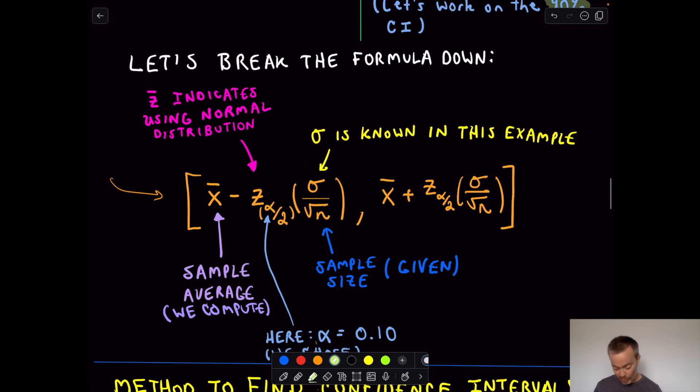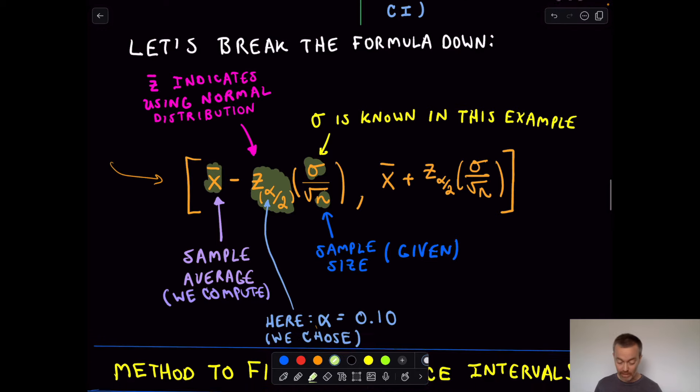Let's talk about the formula real quick. Again, x̄, that's just going to be a sample average. We'll compute it. We just talked about what this z value is. We're just going to look it up from a table. Again, sigma is given. The squared, or excuse me, n was given. That's our sample size. So really, there's not a lot to compute other than the average and then to look up that z value in the table and then just be careful with your arithmetic. That's all you're doing in these examples.